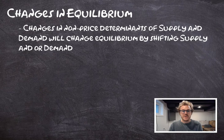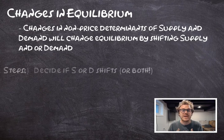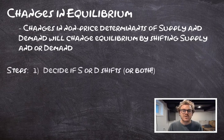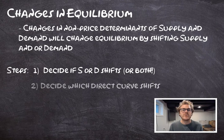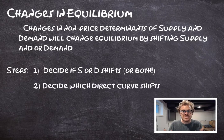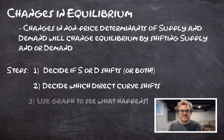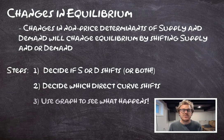In general, we should think about using three steps to determine what happens to equilibrium when we have changes in non-price determinants. First, decide whether an event is going to shift the supply curve, the demand curve, or both. Second, decide which direction it shifts — does the event decrease or increase supply, decrease or increase demand? Finally, use our supply and demand diagram to figure out what happens to equilibrium price and quantity.